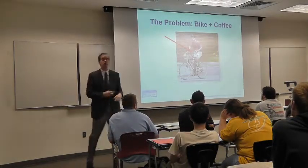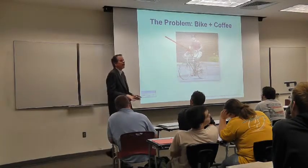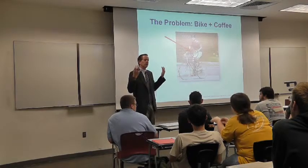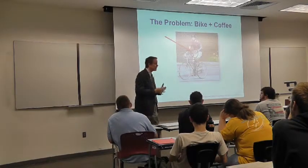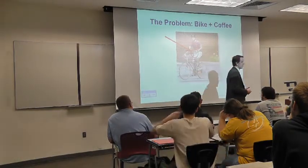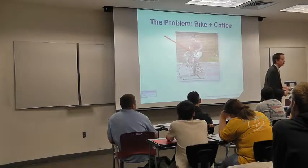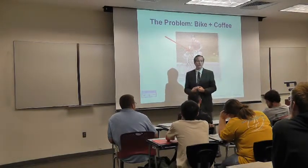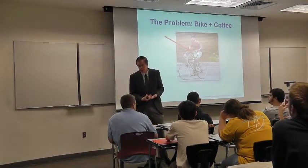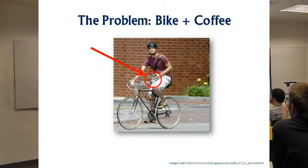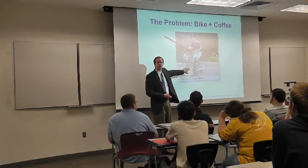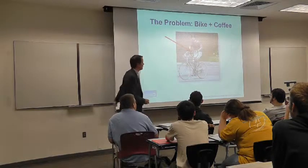Now we need to work with the 10 steps, otherwise they won't stick. We're going to tackle a critical problem: bikers who want to drink coffee. Clearly, grabbing a mug and biking with one hand is not a good solution. So let's apply the 10-step process. What's step one — Problem Identification? We need to determine the customer's true needs. What's the true need for our biker? Both hands on the handlebars.